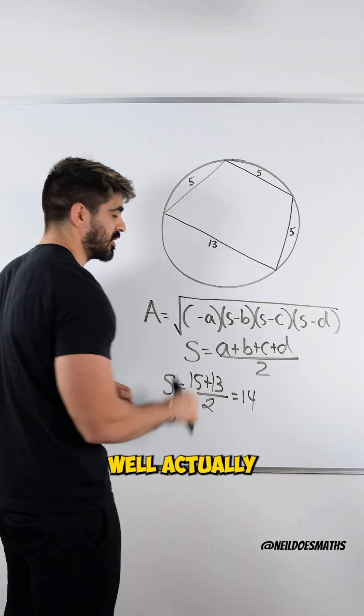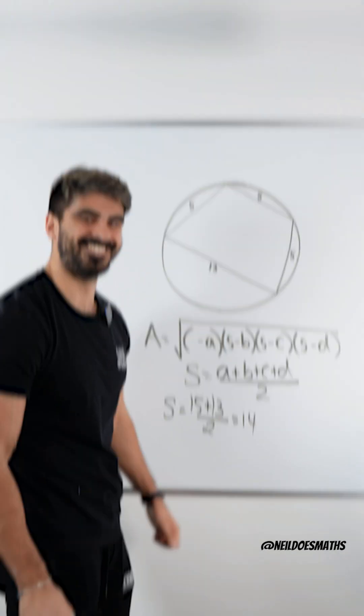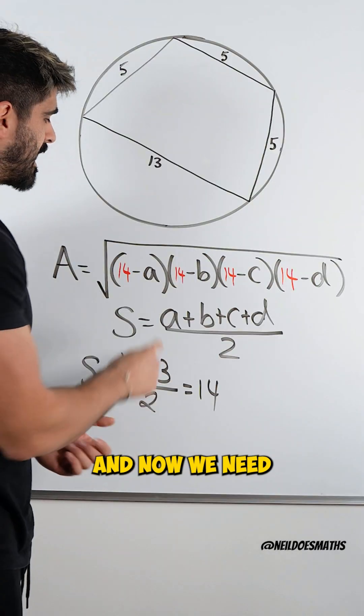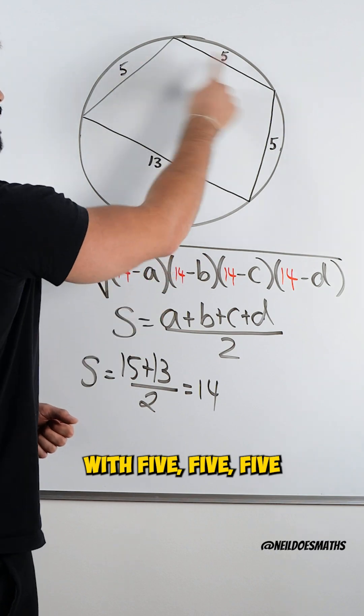So all of these S values, well actually let me just remove these S's and change them to 14. So we have all these 14s and now we need to replace A B C D with 5, 5, 5, 13.